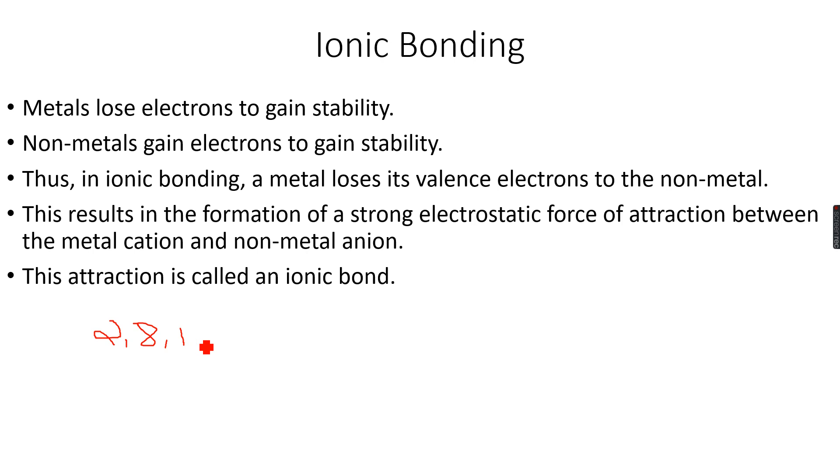So sodium would like to lose this valence electron because when it loses it, it only has two shells which have the first one with two electrons and the second with eight electrons, and we know that this is the maximum number of electrons these two shells can have.